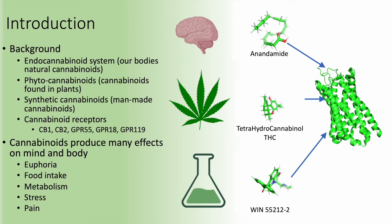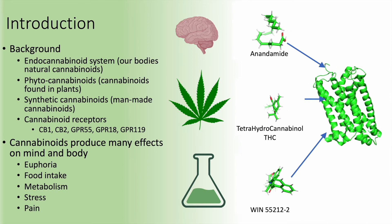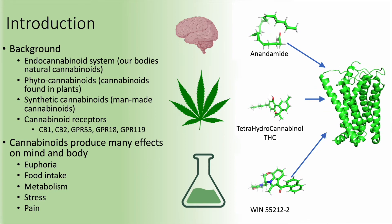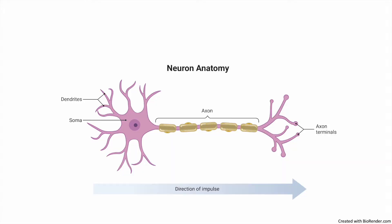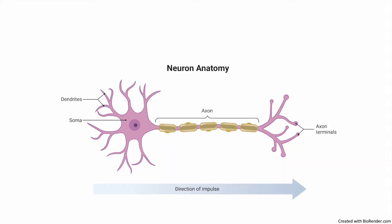Today I will be specifically talking about the mechanism of THC and how it alters neuronal activity. Your brain is made up of many cells called neurons, which connect to and pass signals to one another. Neurons receive signals from other neurons through their dendrites. Signals received at the dendrites are passed along the neuronal membrane towards the end of the cell, called the axon terminal. These axon terminals are then able to pass the signal on to the next cell.